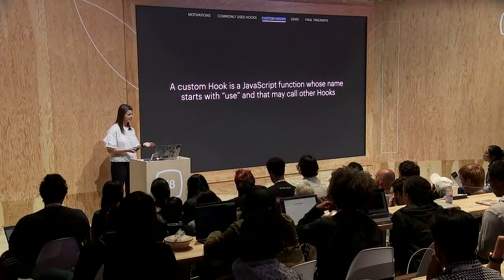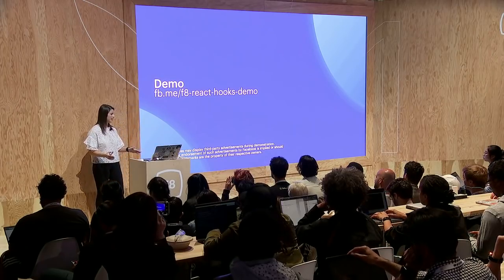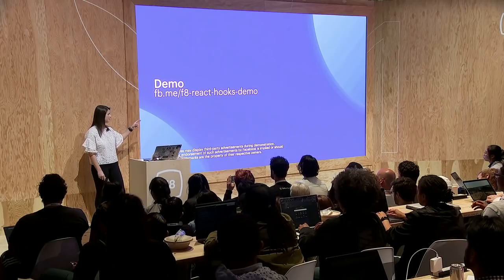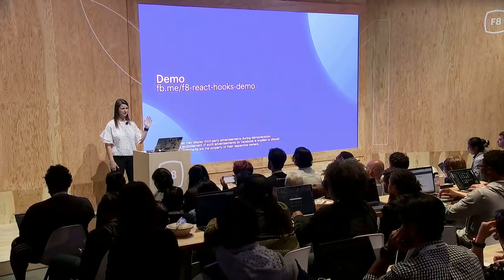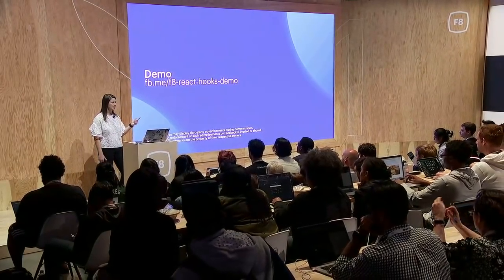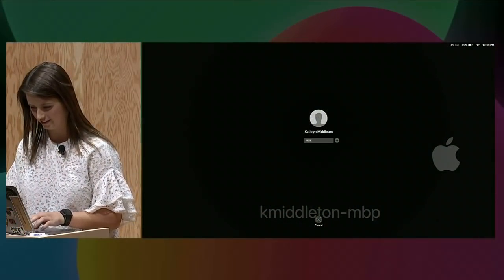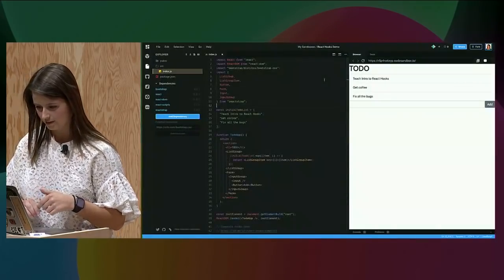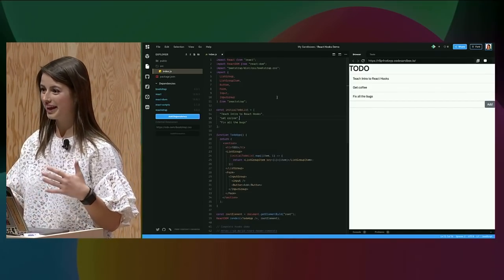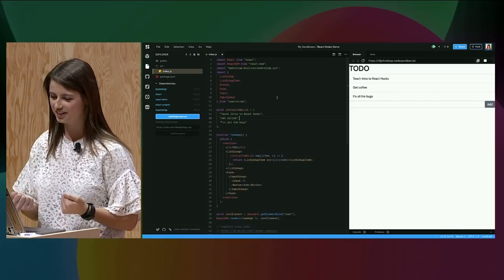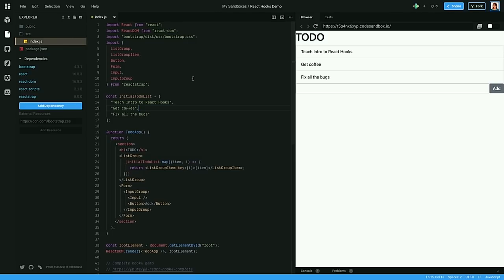We're going to create our own custom hook in the demo. If you're on your computer, go to fb.me/f8-react-demo — this will redirect you to a CodeSandbox link. When you hit save, it'll fork it so you have your own copy. When you land on this page, you'll see a React web application — a basic static to-do list. We have our index.js file which contains our main component, our to-do app, which we render. We also have our index.html and package.json files.